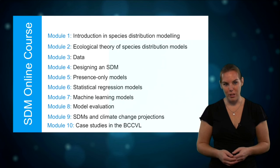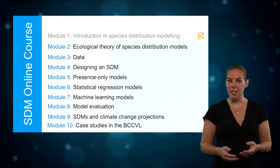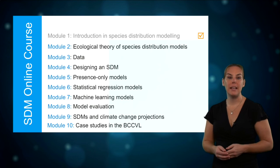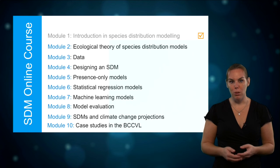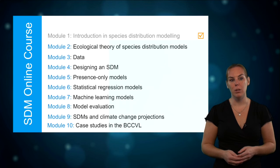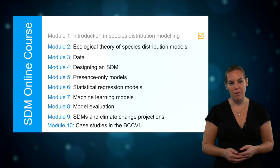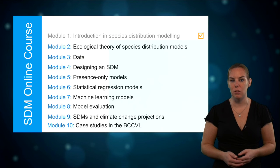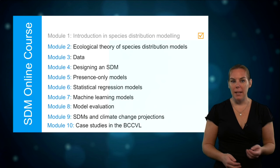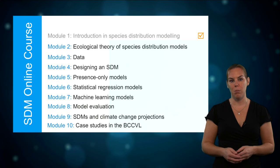So this was a short introduction to species distribution modelling. In other modules of this course, we will look at each of the components of a species distribution model. Module 2 will explain the ecological theory behind these models. Then module 3 will cover how to get and interpret the input data. Module 4 will give an overview of the different models that are available and how to choose which model best suits your data and the question you're trying to answer. We explain the different algorithms you can use to build species distribution models in more detail in three different modules.